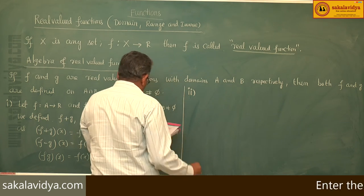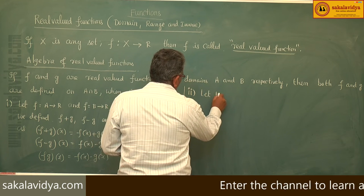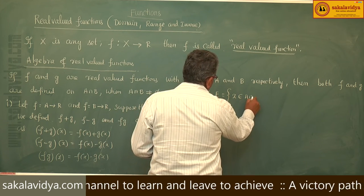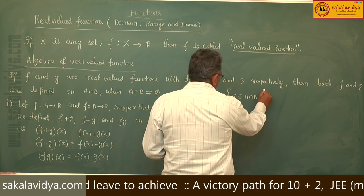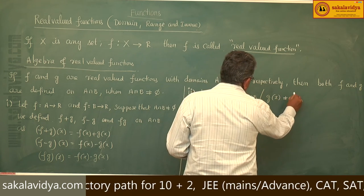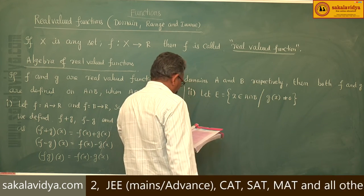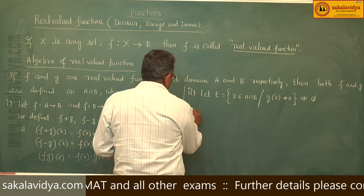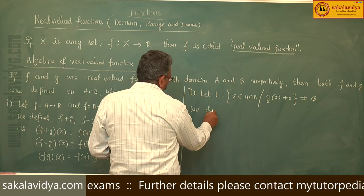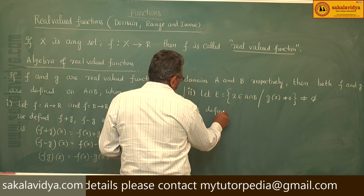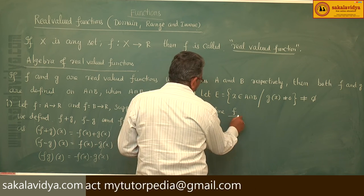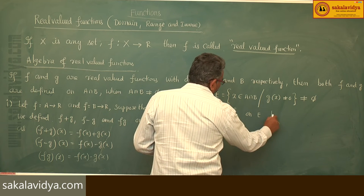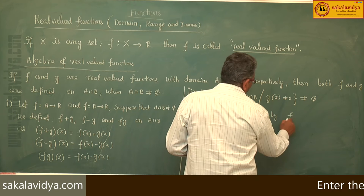Second: let E be the set of x belonging to A intersection B such that g(x) does not equal zero. We define f divided by g on E by (f/g)(x) = f(x)/g(x).